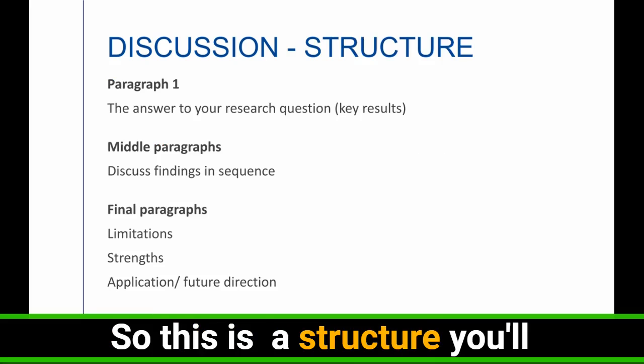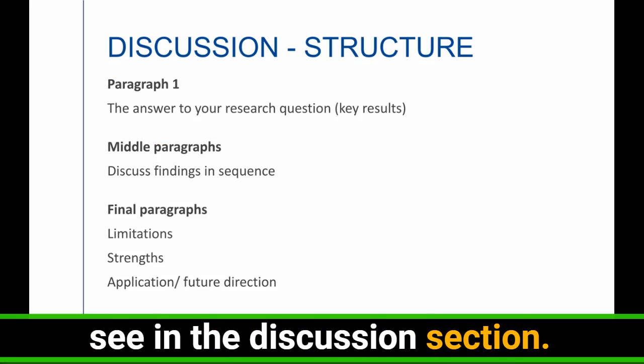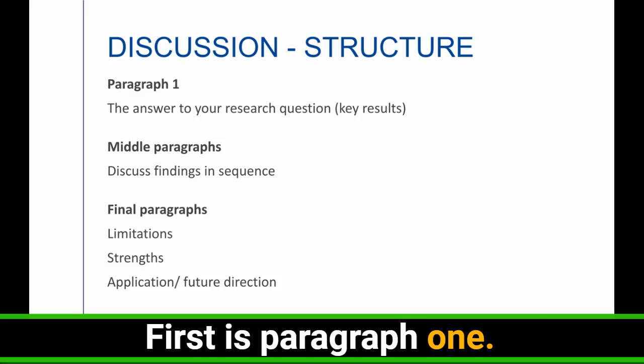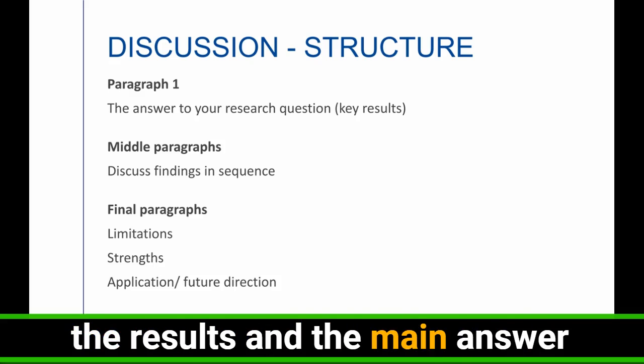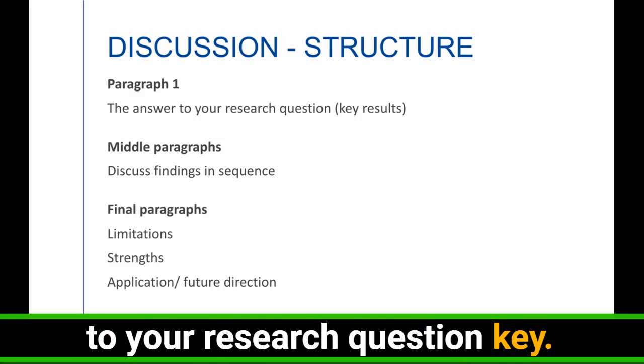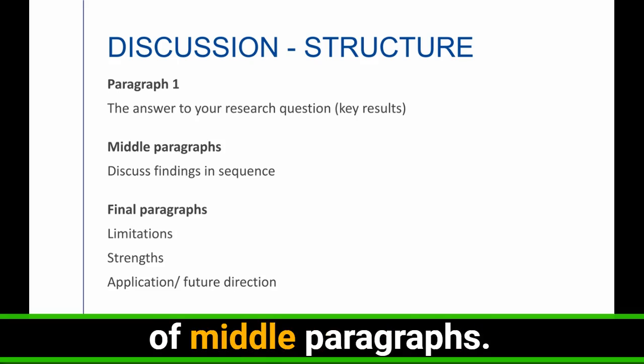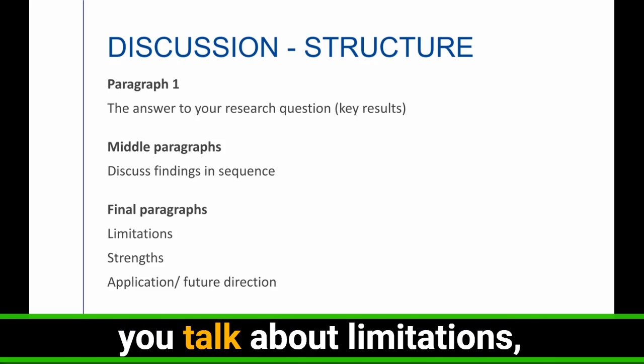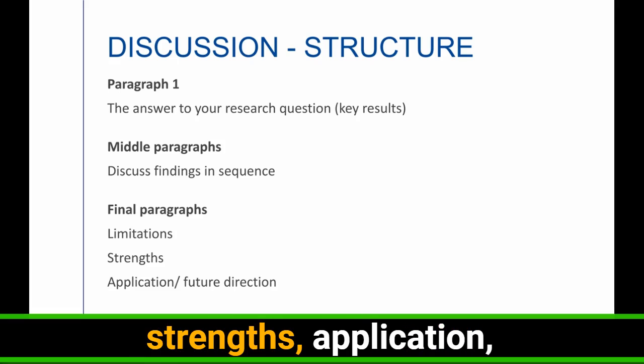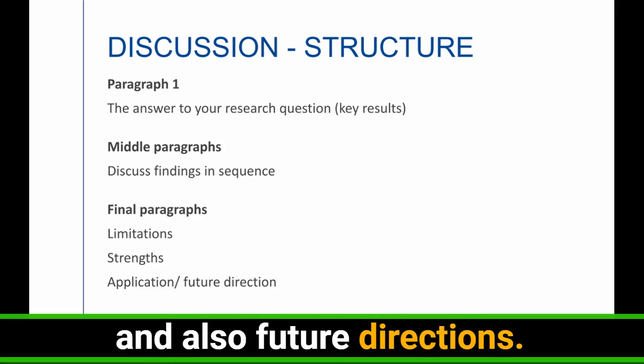So this is a structure you'll see in the discussion section. First is paragraph one. Usually it is a summary of all the results and the main answer to your research question, the key results. Then you have a bunch of middle paragraphs. Here you're discussing findings in sequence or in importance. And then in the final paragraphs, you talk about limitations, strengths, application, and also future directions.